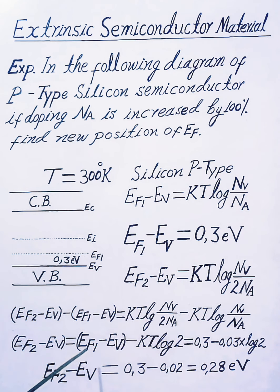We are putting the value of the first Fermi level EF1 minus EV, 0.3 electron volts minus KT. The value of KT equals 0.03 electron volts multiplied by log 2.